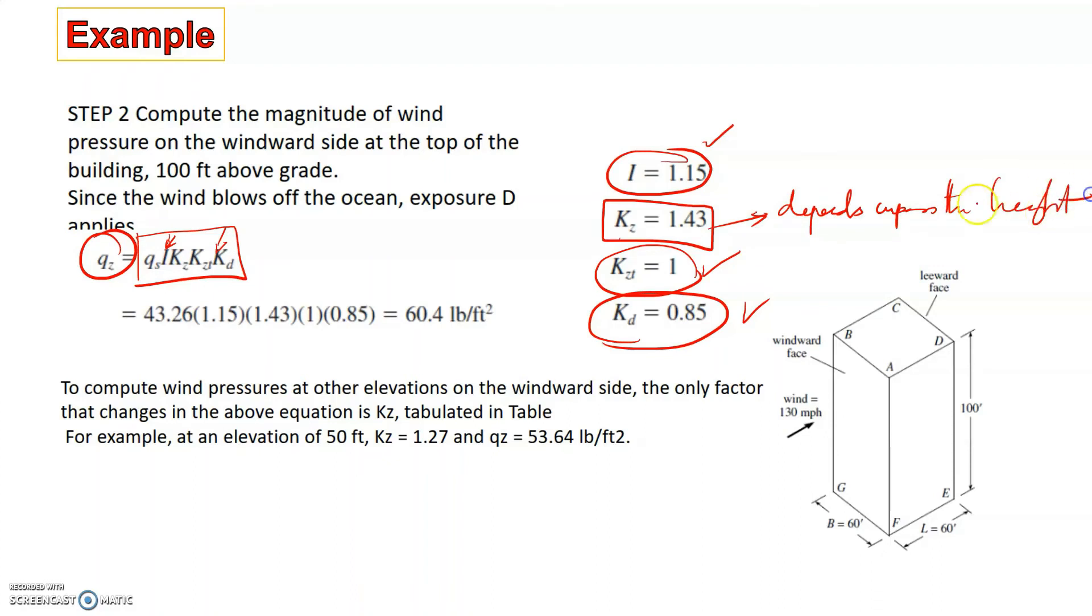To get the peak value of Qz, you have to take the highest value of KZ, which corresponds to height equals 100 feet.